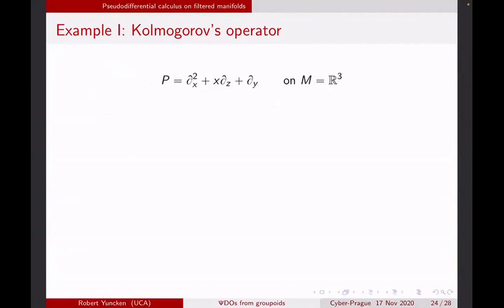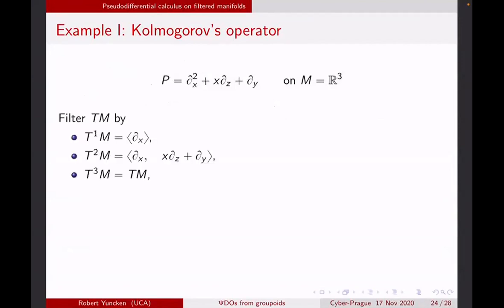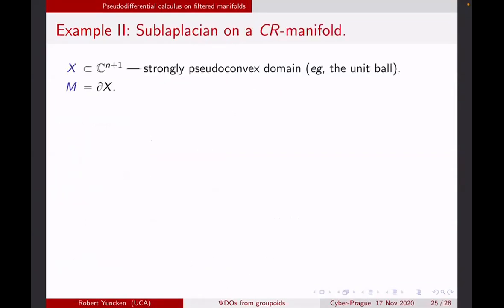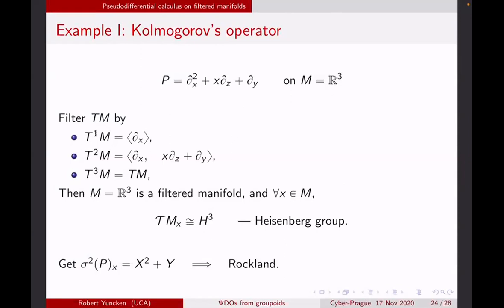Let's do some examples. Take Kolmogorov's operator from the start of this talk. Take M = ℝ³, filter it with d/dx as an order-one vector field, add X·d/dz + d/dy as an order-two vector field, and the whole tangent space is degree three. This is a filtered manifold, and in fact the osculating groups are the Heisenberg group — M itself is a Heisenberg group here. The principal part of this operator is X² + Y, and by the representation theory of the Heisenberg group — which is not complicated — you find that it's Rockland. So it's indeed a hypo-elliptic operator, which Kolmogorov had already proved almost a hundred years ago — this is a new way of seeing it.